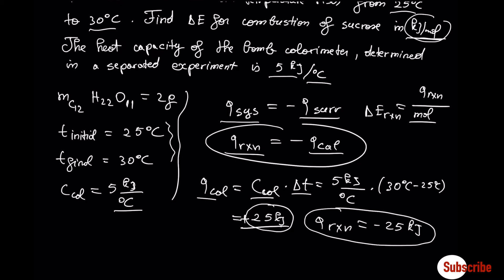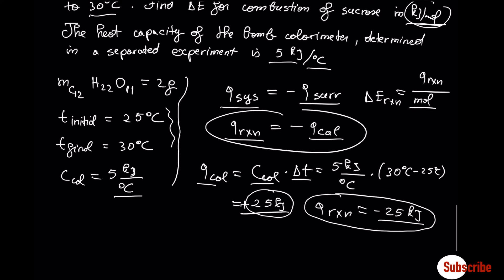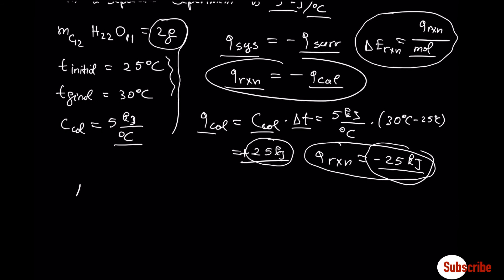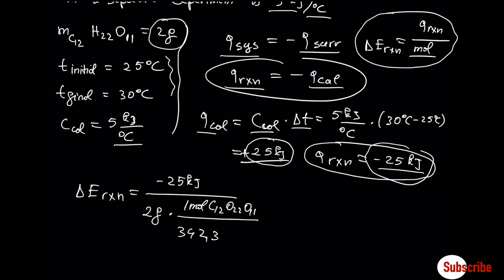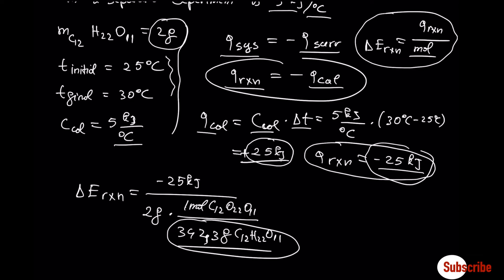The heat of minus 25 kJ is released by the combustion reaction, but it corresponds to 2 grams of sucrose. To find the heat released in kJ/mol, we divide by the moles of sucrose using its molar mass. So the change in internal energy of this combustion reaction is minus 4278.75 kJ/mol.